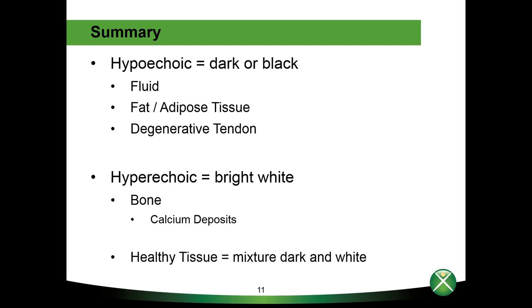In summary: the term hypoechoic refers to structures that lack echo — ultrasound waves transmit through them. Fluids, fats, and diseased tissue are hypoechoic and will show up dark or black on an ultrasound image. Hyperechoic means ultrasound waves do not readily pass through the structure, giving a bright white appearance, such as bone and metal. Healthy tissue will appear gray or a mixture of dark and white. With these concepts, you should be able to view ultrasound images with a better understanding. Please complete the short quiz to achieve credit for this course.